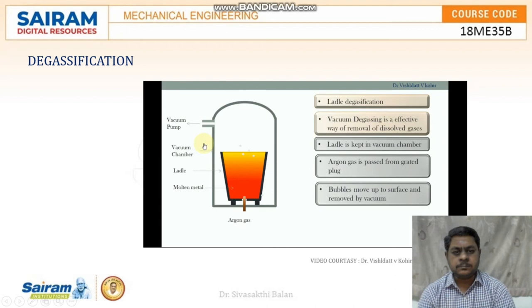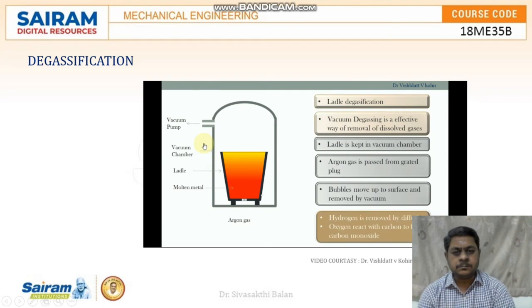Normally, hydrogen is removed by the diffusion process, whereas oxygen reacts with the carbon present in the steel to form carbon monoxide. As carbon monoxide is light in weight, it also moves upwards in the ladle and is removed by the vacuum.